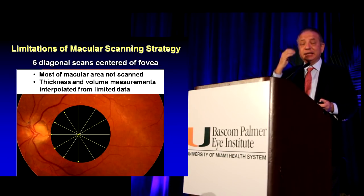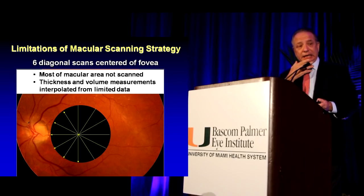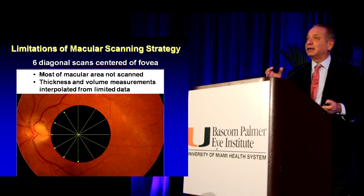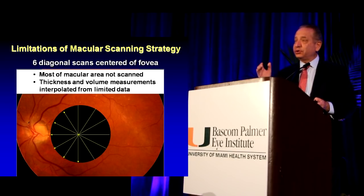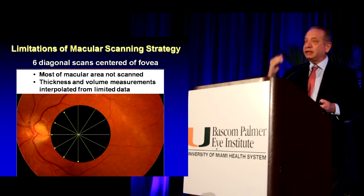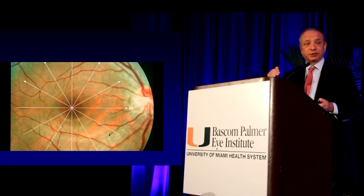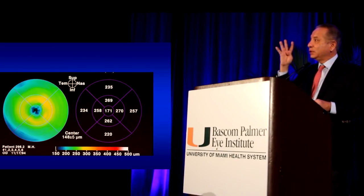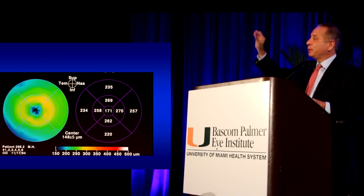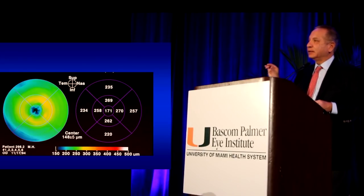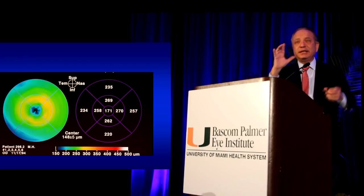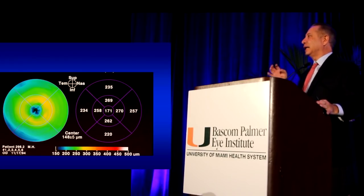This is the original Stratus machine that we invented. We looked at only six scans, and it's amazing that despite the fact that we didn't scan most of the macula, we could make very good clinical decisions. We no longer do that — we now scan the macula at 50-micron intervals and get much more detailed pictures. This is an example of the scanning strategy used to create the so-called thickness map. The original thickness maps were based on only six scans, and we interpolated or filled in the area in between.